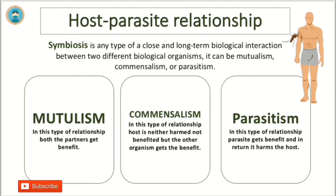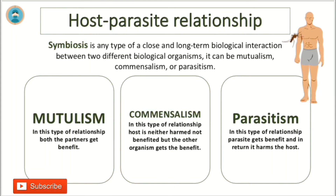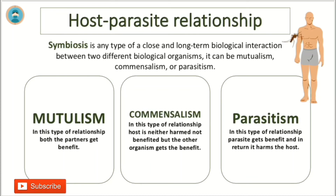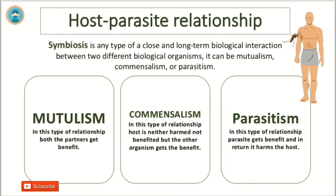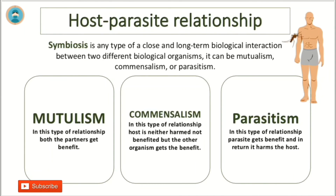Symbiosis can be mutualism, commensalism, or parasitism. In mutualism, both partners get benefit. In commensalism, one partner gets benefit while the other partner is not harmed. In parasitism, one organism is the parasite and the other organism is the host — the parasite gets benefit and in return, it harms the host.